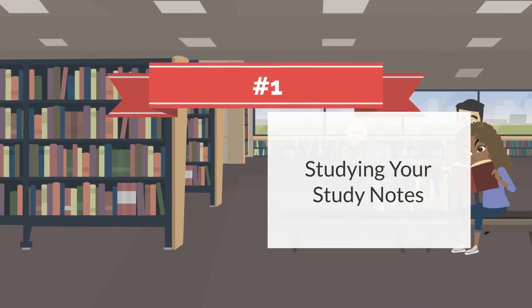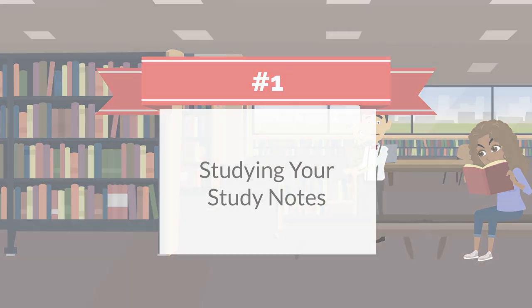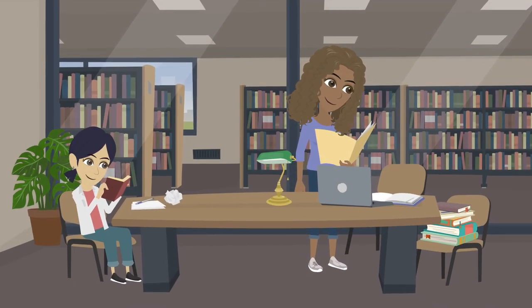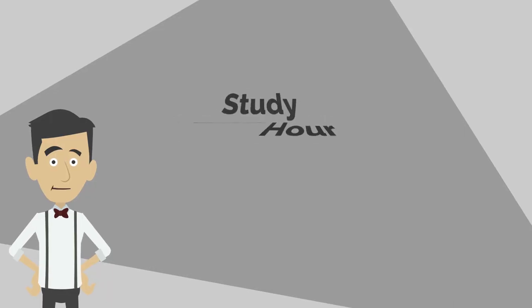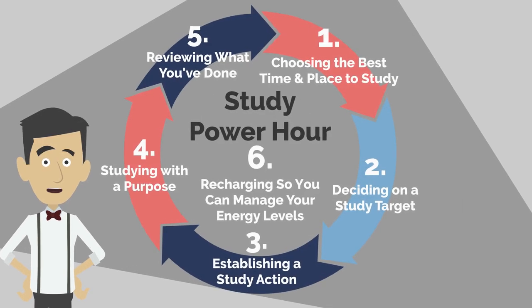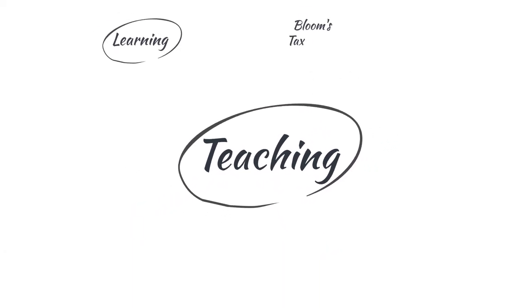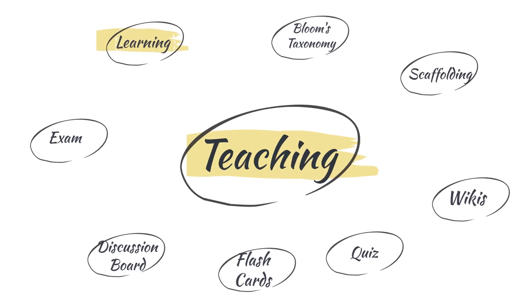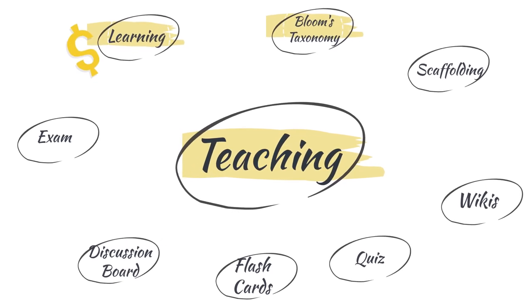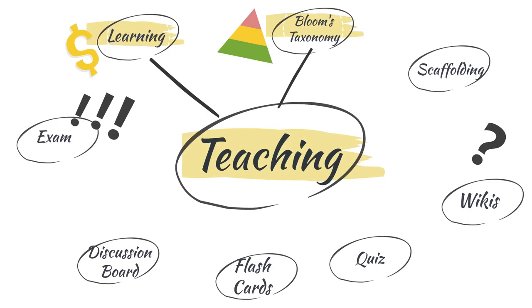Number one: studying your study notes. Once you are in your study hall and trying to study using the study power hour, you need to develop a good process for studying itself. One great strategy is to try to recreate your notes as a graphic organizer. Work on retrieving the information from your head like you would during a test. Create one bubble circle at a time and build your organizer off of it, continuing one circle and one line at a time.